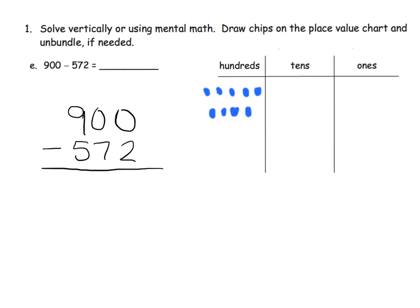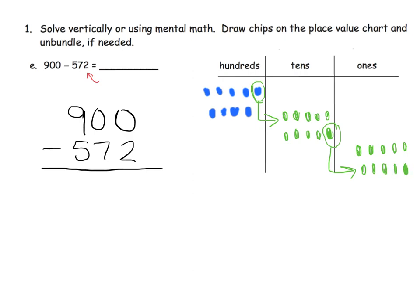There's my 900. We're supposed to take away 572, starting with the ones. We have no ones, so we go all the way to the hundreds and unbundle one of those hundreds — that gives us 10 tens. But then we need to unbundle one of those tens, and that's going to give us 10 ones.